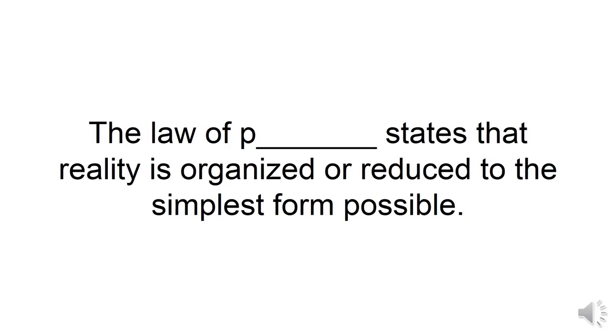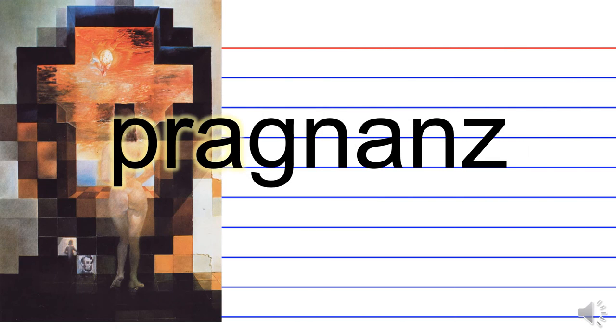The law of p blank states that reality is organized or reduced to the simplest form possible. Which Gestalt principle states this? That would be the law of Prägnanz. Here as an example, I have a piece by my favorite painter, Salvador Dali. It's his rendition of Abraham Lincoln. I actually had the opportunity about two years ago to go see this piece. It's amazing.